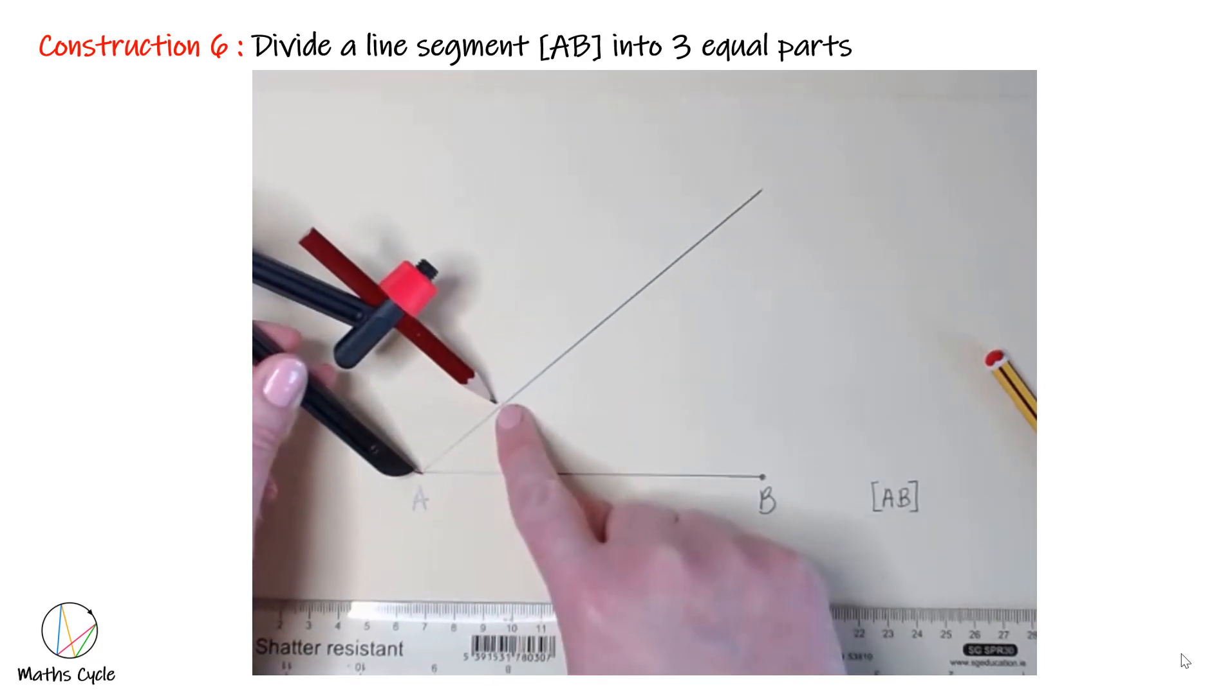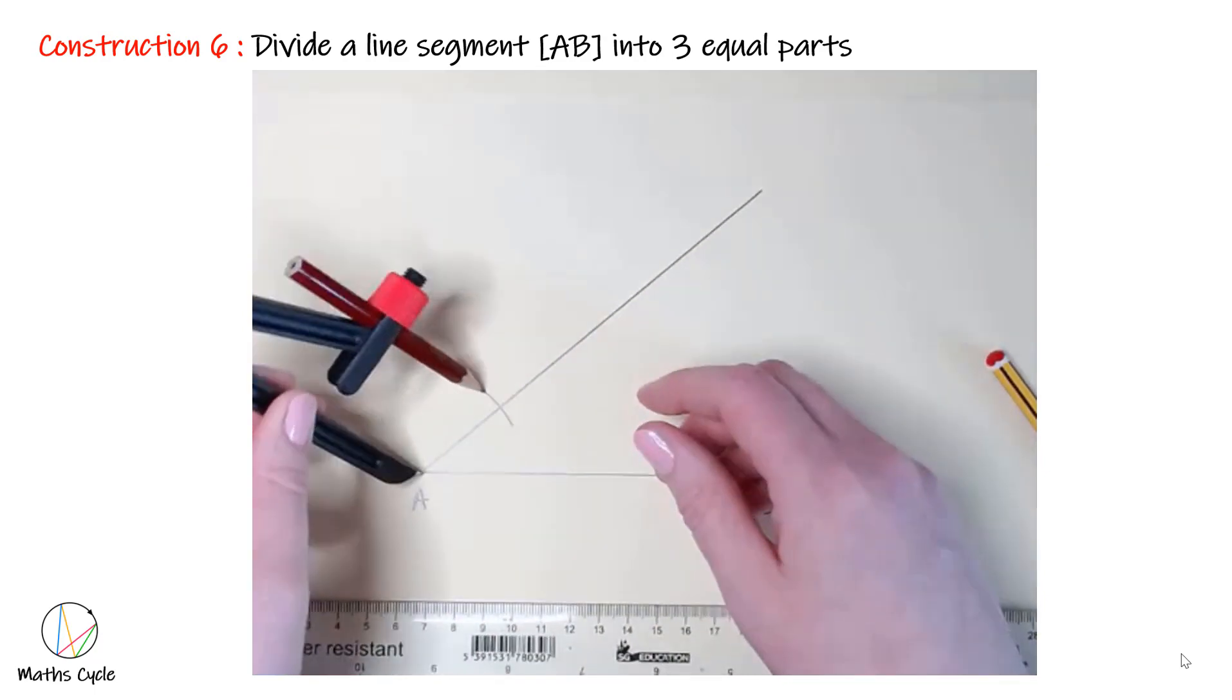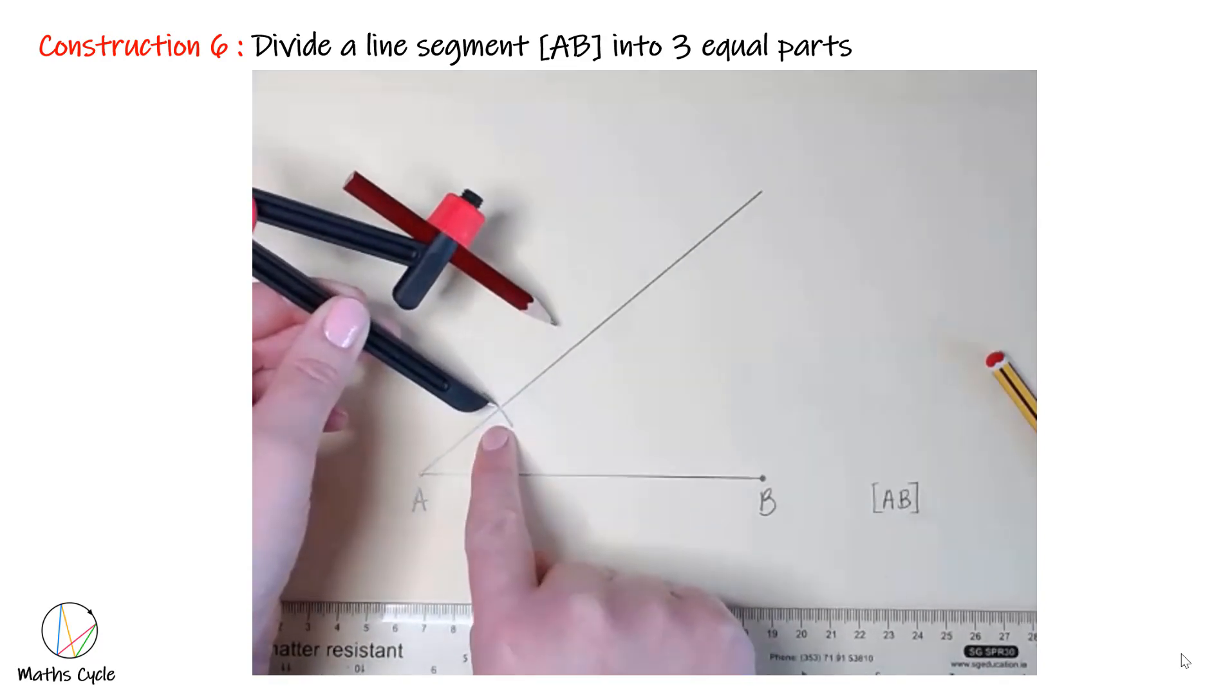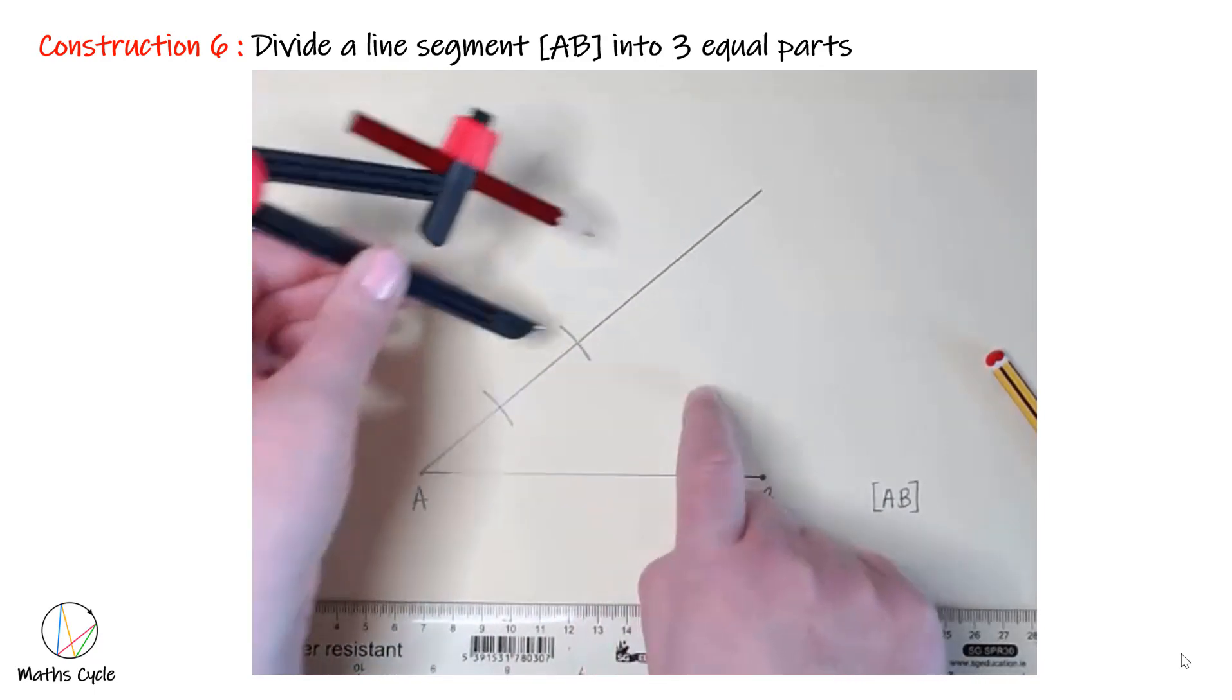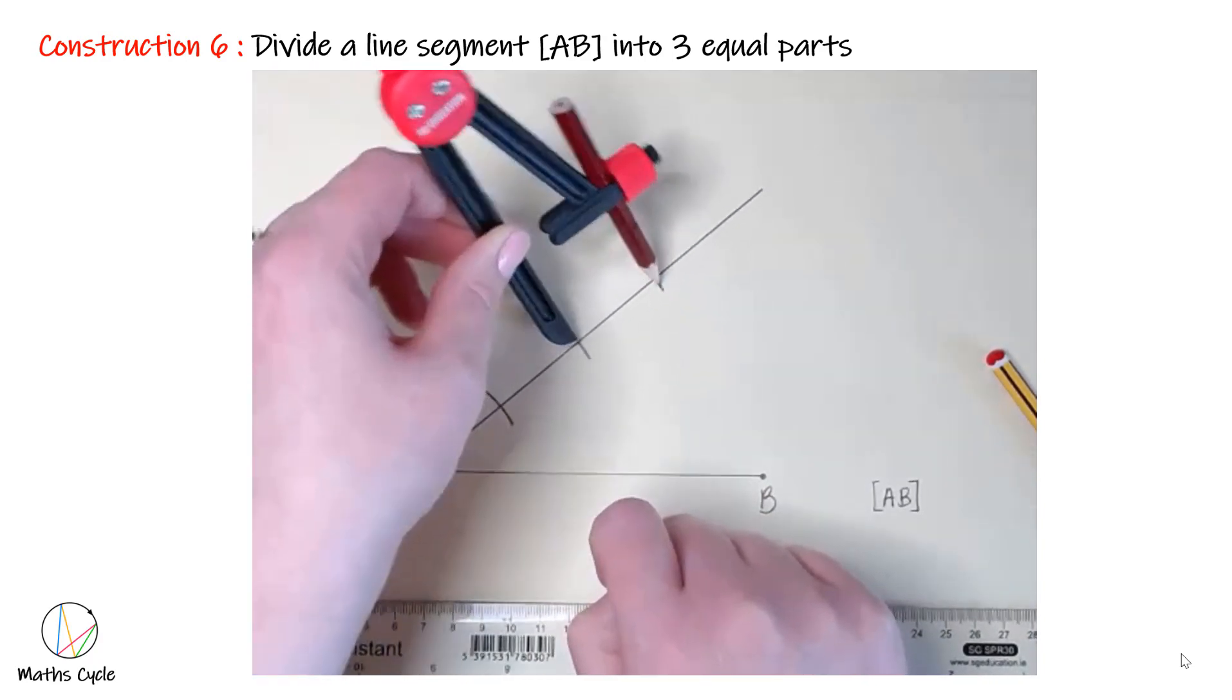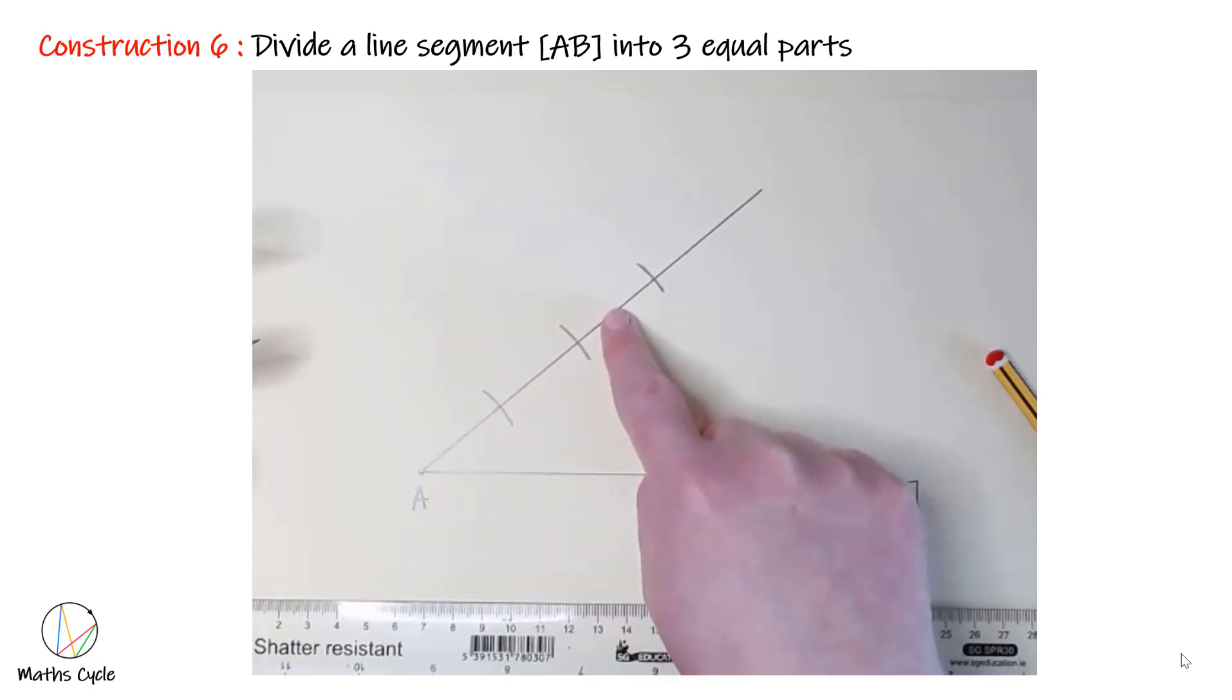Now take your compass and make sure it's of a size that you can fit three arcs in. Put the point on A and make your first arc. Then put your point on the arc that you just made and make another arc. Now put your point on the arc you just made and make another arc. We should have one, two, three arcs, which means we have one, two, three divisions of this line.